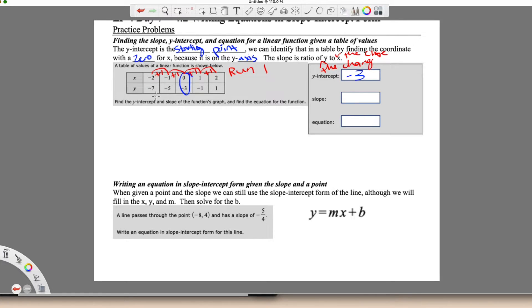And my change in y's, so for this one negative seven to negative five, I'm adding two. Negative five to negative three, I'm adding two. Negative three to negative one, I'm adding two. And negative one to one, I'm also adding two.